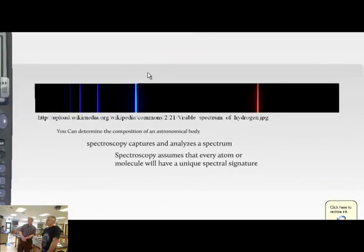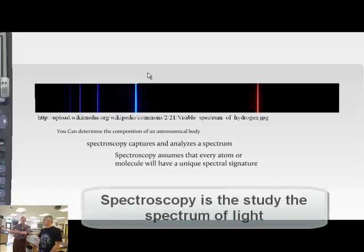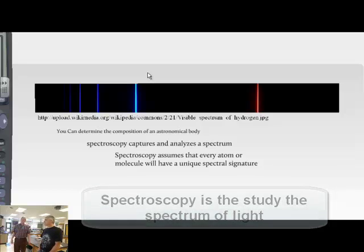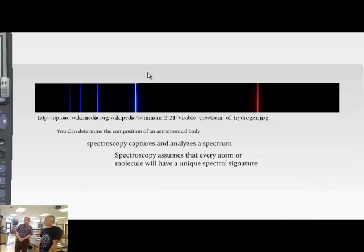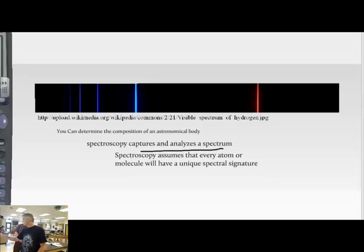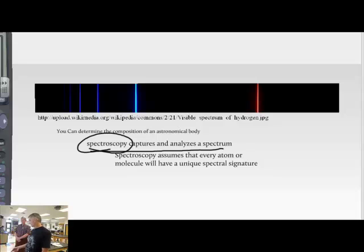So you can determine the composition of an astronomical body by its spectrum. We've never been to the stars - we got kind of close to the Sun with our satellites, but any closer and it would burn up. So how can we tell what's in a star? We analyze the light with a prism. Spectroscopy captures and analyzes the spectrum - the science of analyzing light using prisms is called spectroscopy, and this output is called a spectrogram.